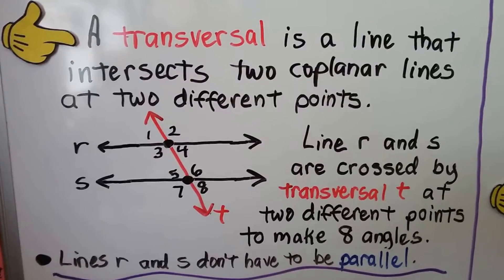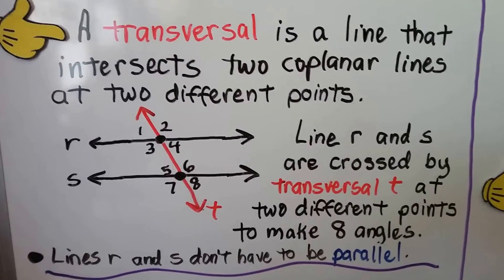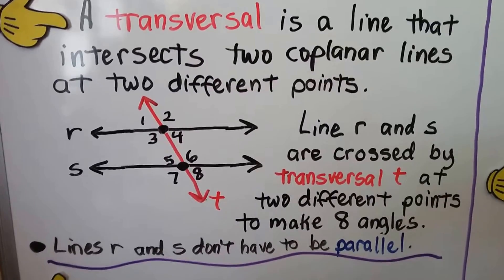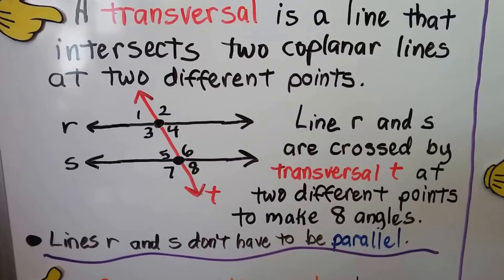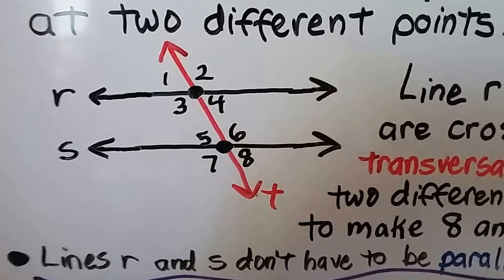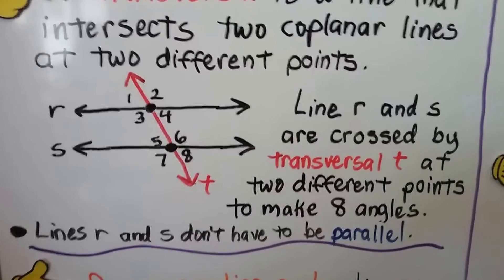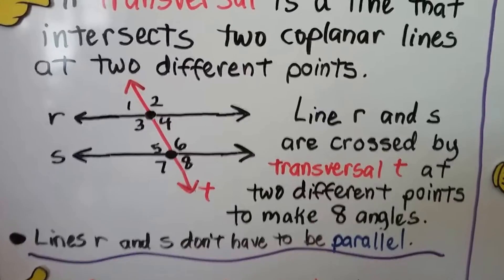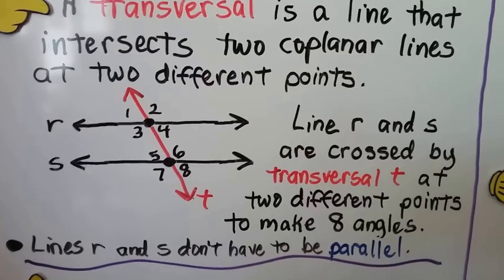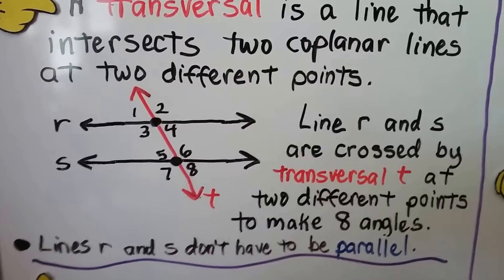A transversal is a line that intersects two coplanar lines at two different points. So the transversal — that red line — intersects two coplanar lines, two lines on the same plane, at two different points. We can see the big black dots where they intersect with the transversal. We're going to call these line R and line S, and we're going to call the transversal line T.